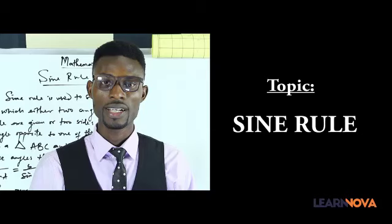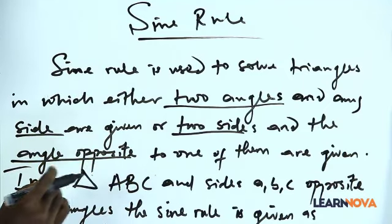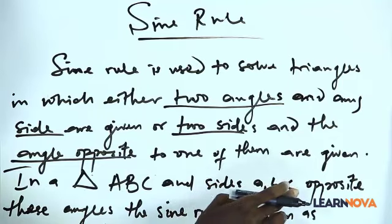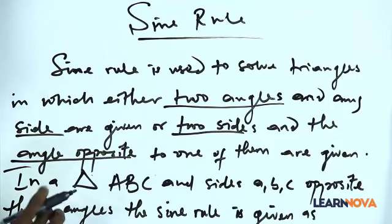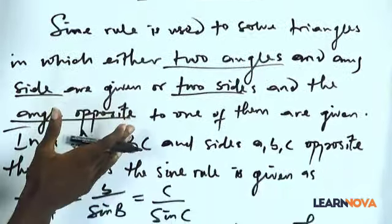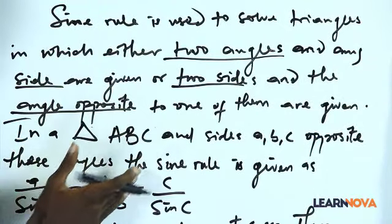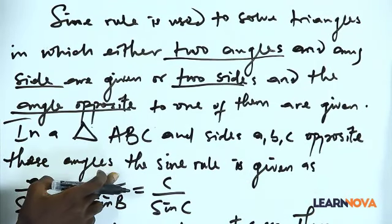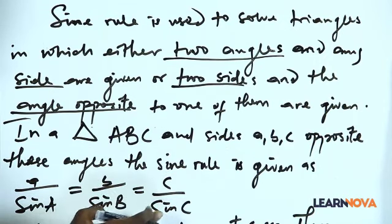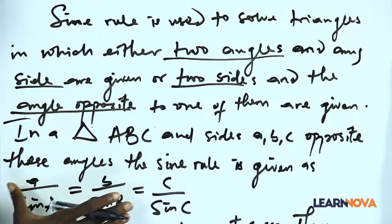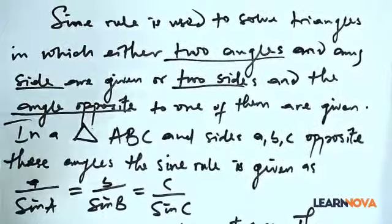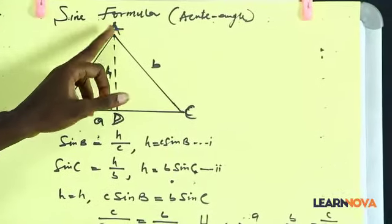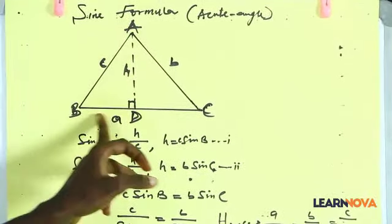The topic is the Sine Rule. In a triangle ABC, with sides with lower cases a, b, c opposite to these angles, the sine rule is given as a over sin A, equals b over sin B, equals c over sin C. Take a look at the chart — it shows triangle ABC where the opposite side of angle A is the side called side a.